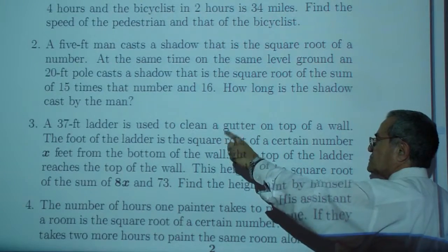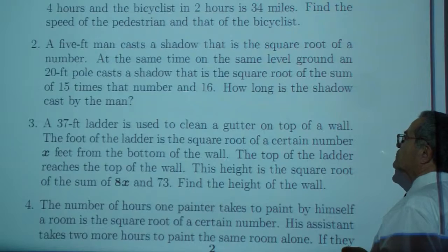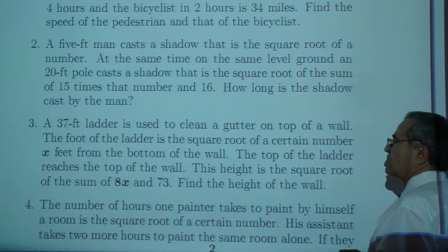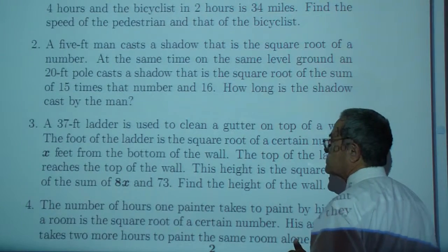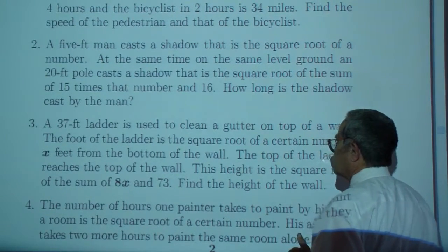Then exercise three. A 37-foot ladder is used to clean a gutter on top of the wall. The foot of the ladder is the square root of a certain number x feet from the bottom of the wall.